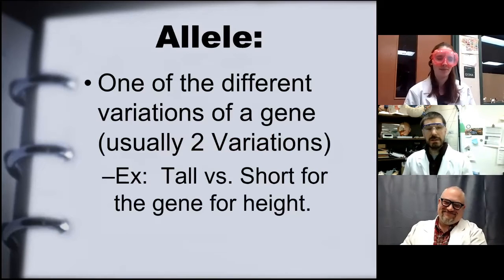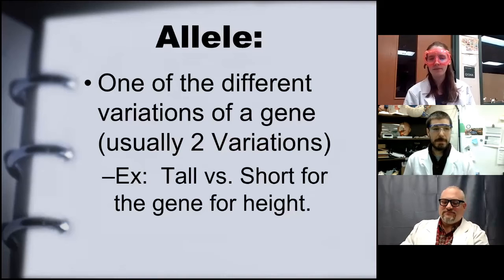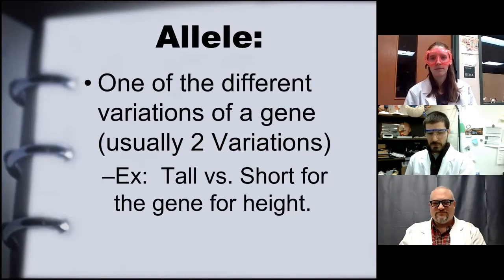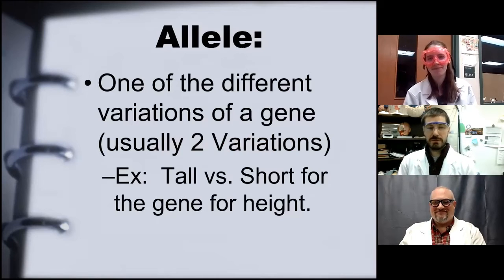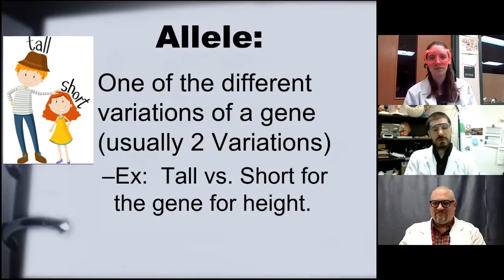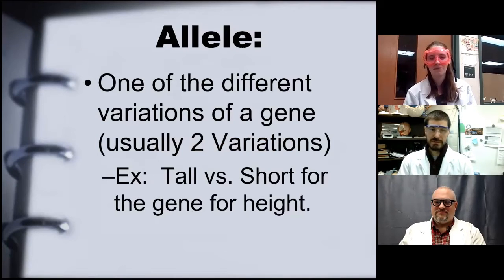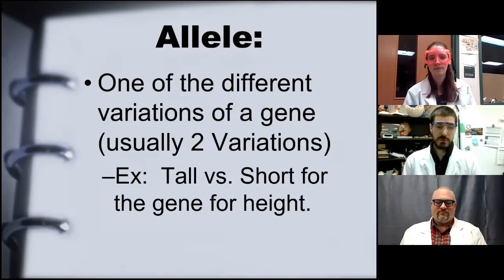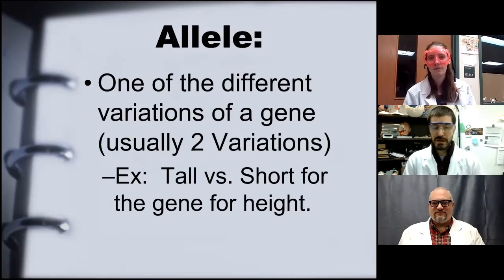Allele is very closely related to gene, but there's a subtle and important difference. A single gene — let's use height as an example, even though multiple genes influence height — can have different versions: a tall version and a short version. We call the different versions of the same gene an allele. The same applies to eye color, hair color, and physiological traits like muscle recovery, food digestion, or hormone production.